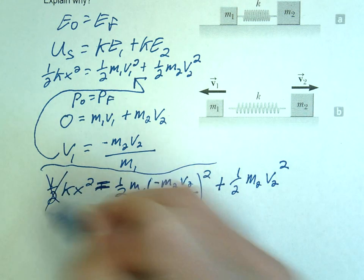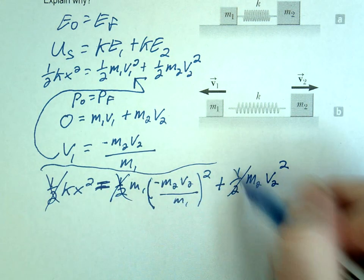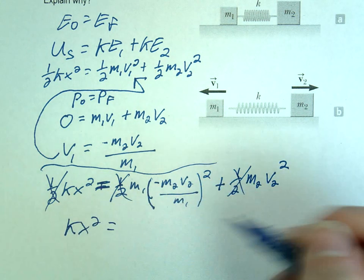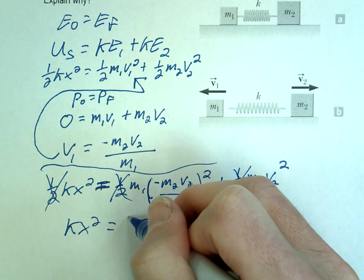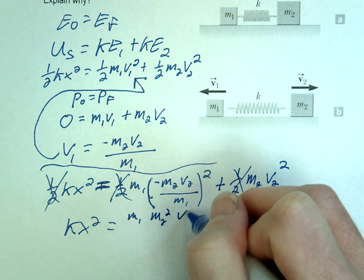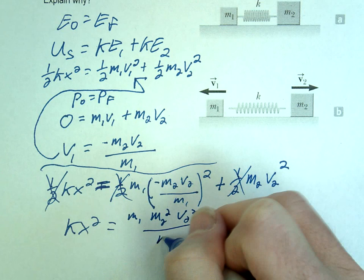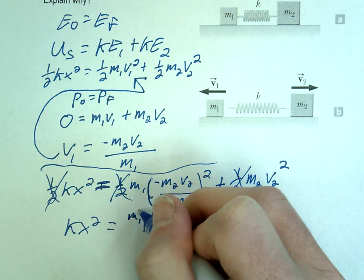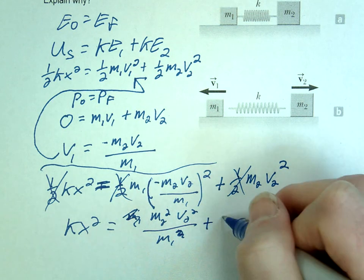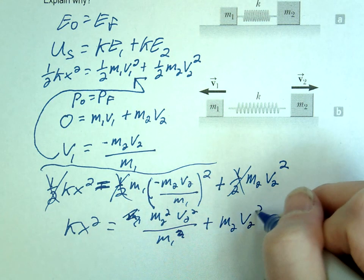Actually, I have halves everywhere. So let's just cancel out all those halves. So we've got Kx² equals, so M1, I guess I'll just do this, M2² V2² over M1². One M1 cancels plus M2 V2².